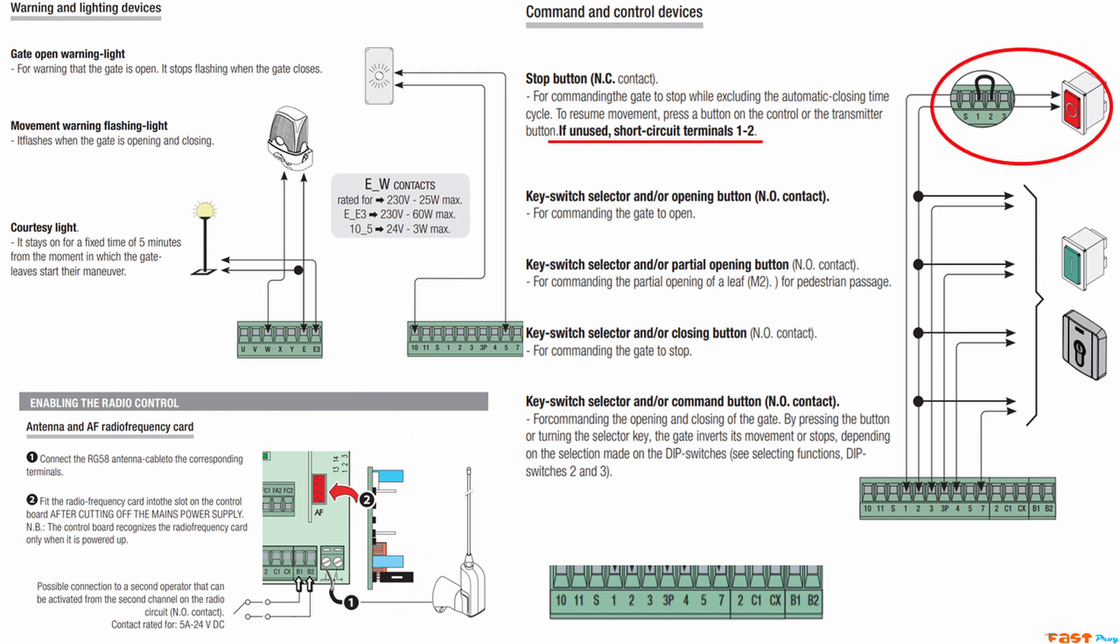If you don't have an emergency stop button connected between terminals 1 and 2 of the ZA3P, then make a jumper between these two terminals. Also, if you don't have photocells connected to terminal C1, make a jumper between terminals 2 and C1.